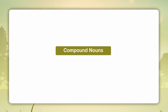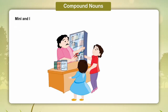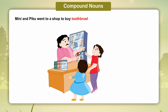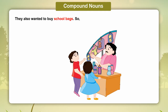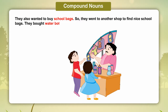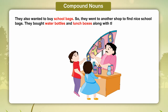Compound Nouns. Minnie and Piku went to a shop to buy toothbrushes and toothpaste. They also wanted to buy school bags, so they went to another shop to find nice school bags. They bought water bottles and lunch boxes along with the school bags.